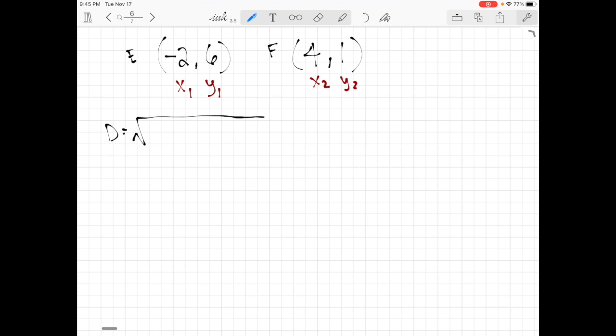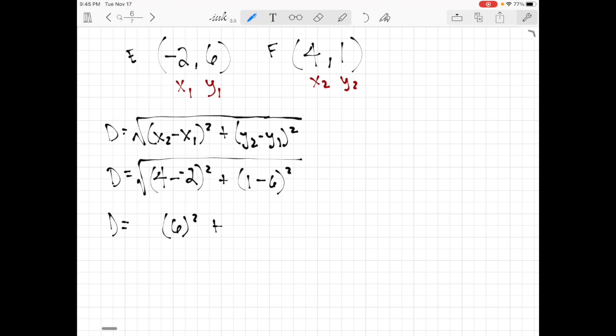So we're going to go D equals the square root of X2 minus X1 squared plus Y2 minus Y1 squared. And I'm going to start plugging stuff in. And D equals my X2 is four, my X1 is negative two, and my Y2 is one, and my Y1 is six. Let me take the square root. So then I can start simplifying. Four minus negative two, that's the same as four plus two. It's going to be six to the second power. And then one minus six, that's negative five. Take that to the second power and take the square root.